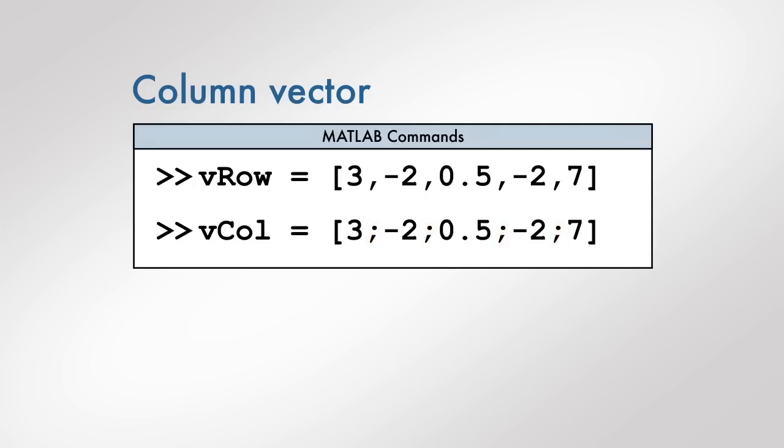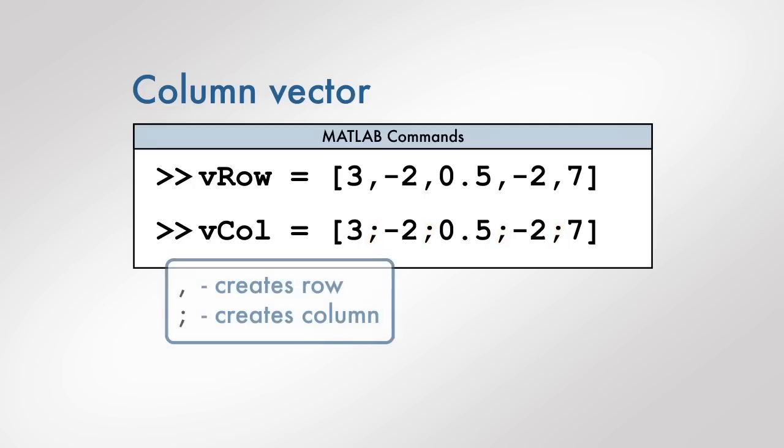So, to create the column vector, we should begin and end the vector with square brackets and separate the numbers by semicolons.